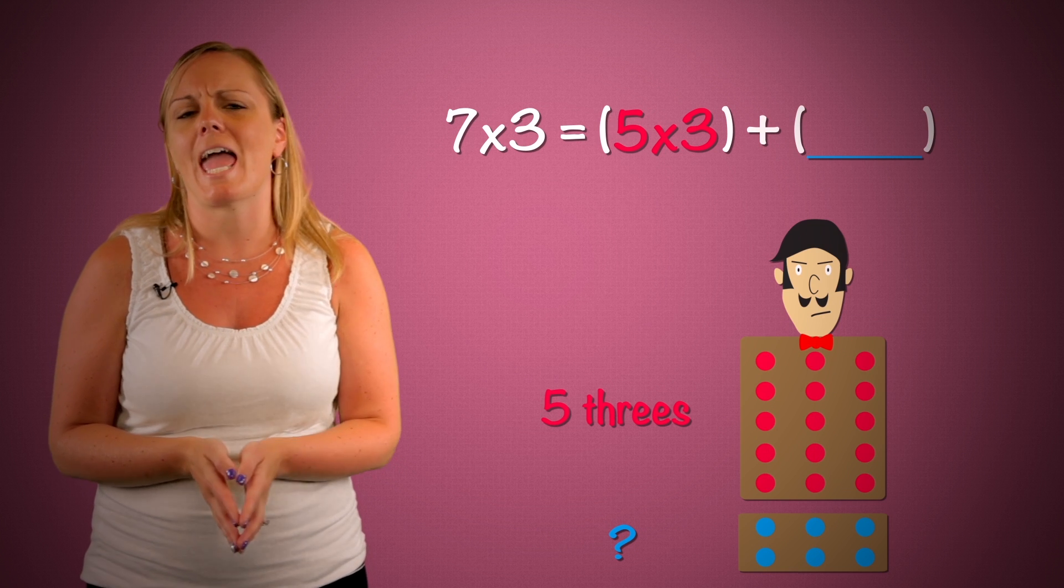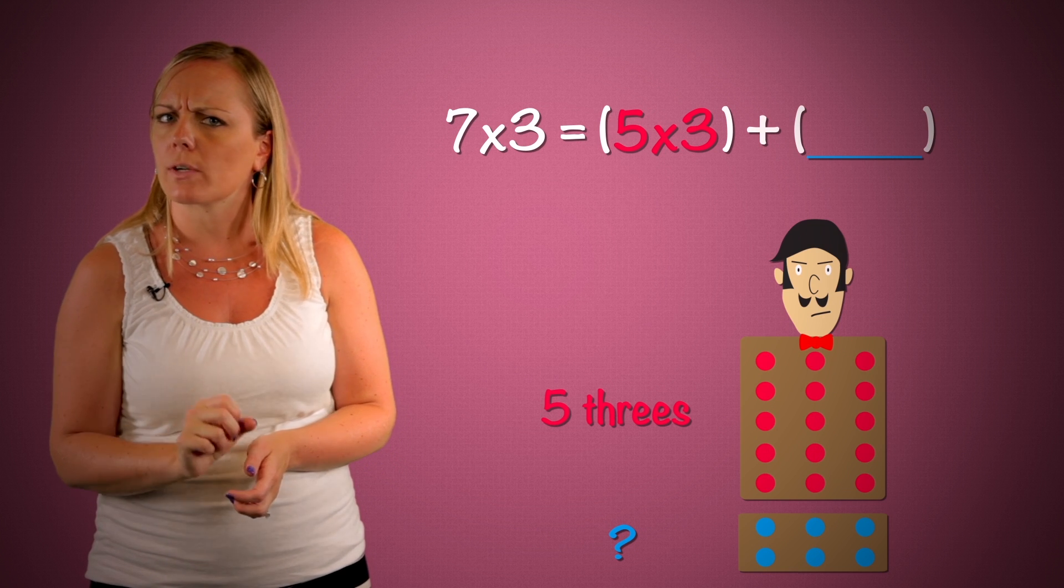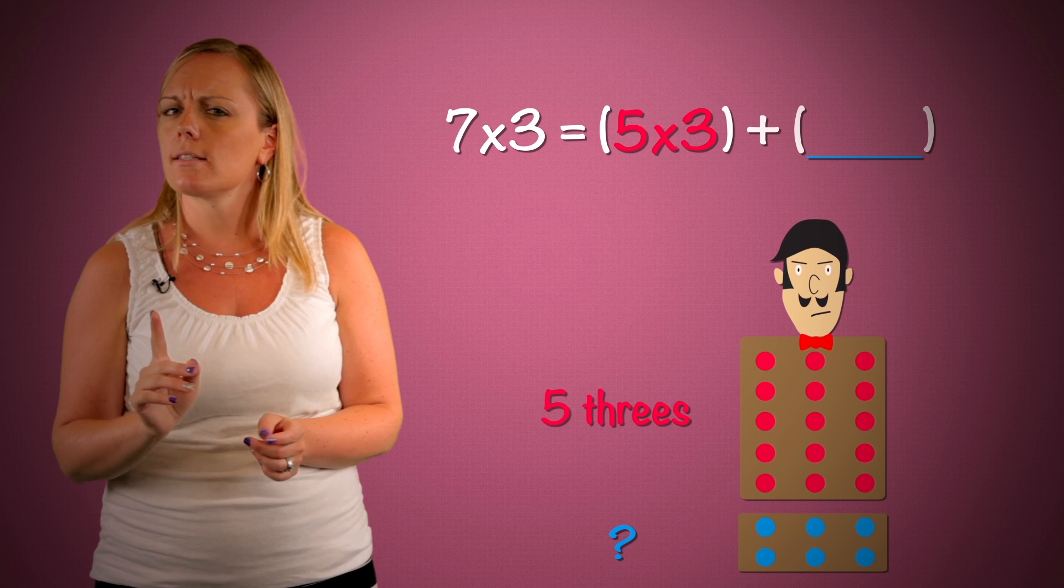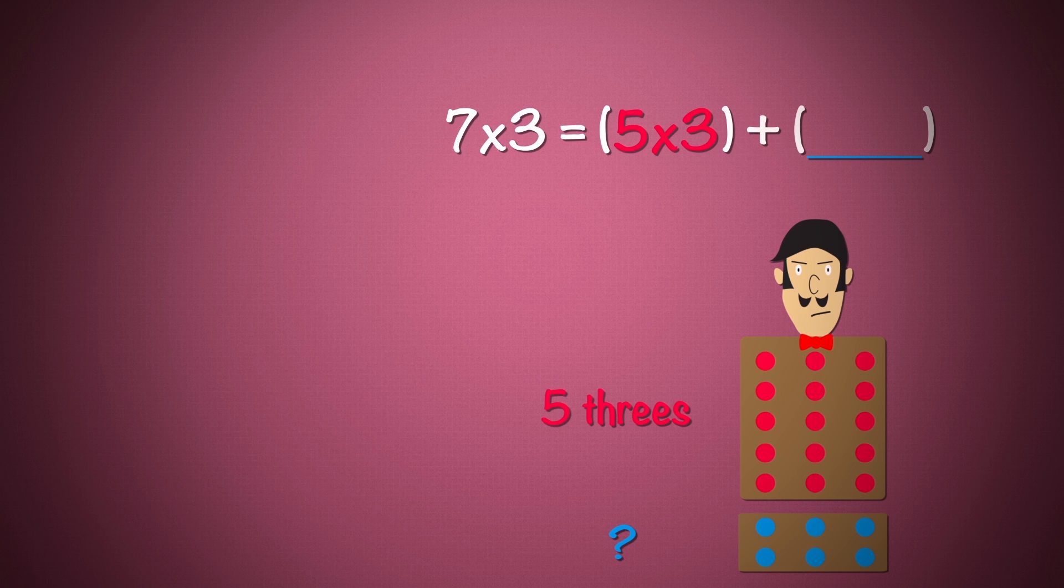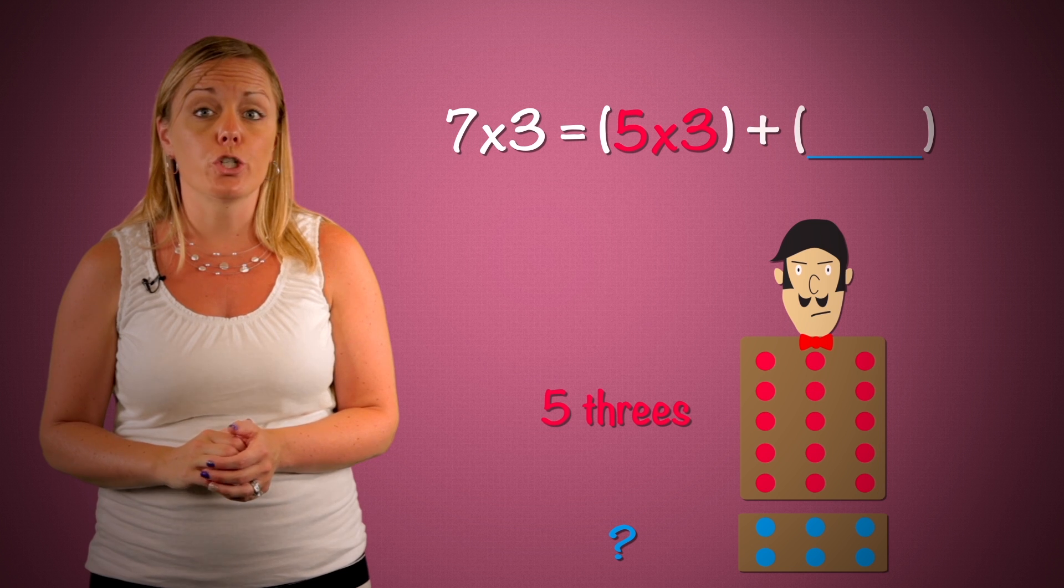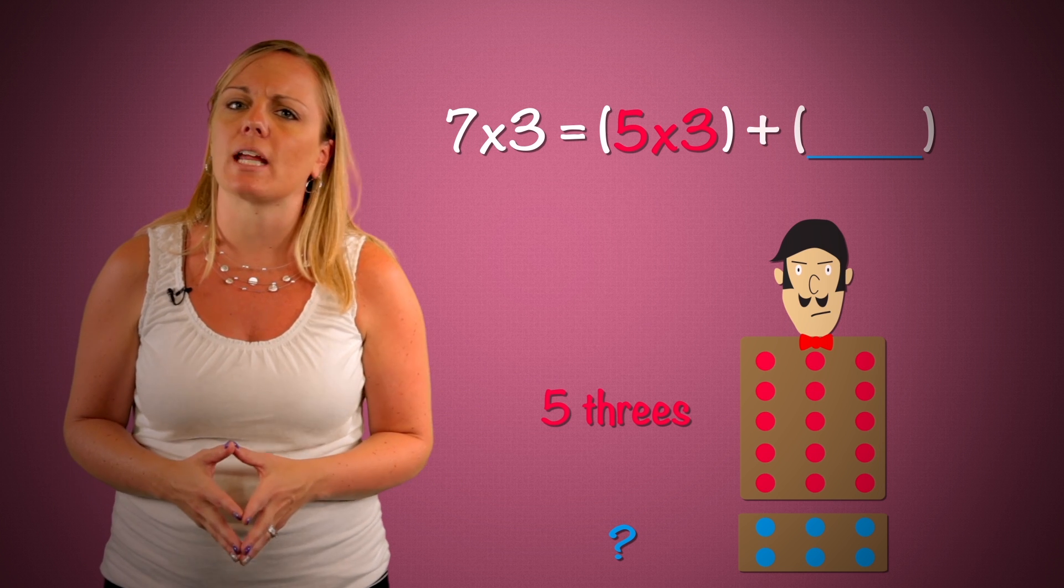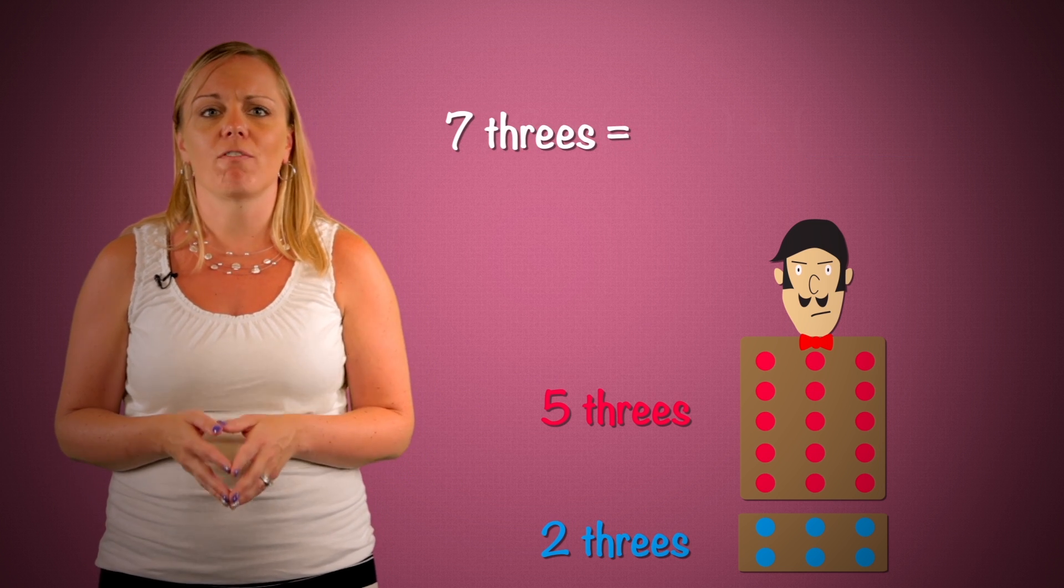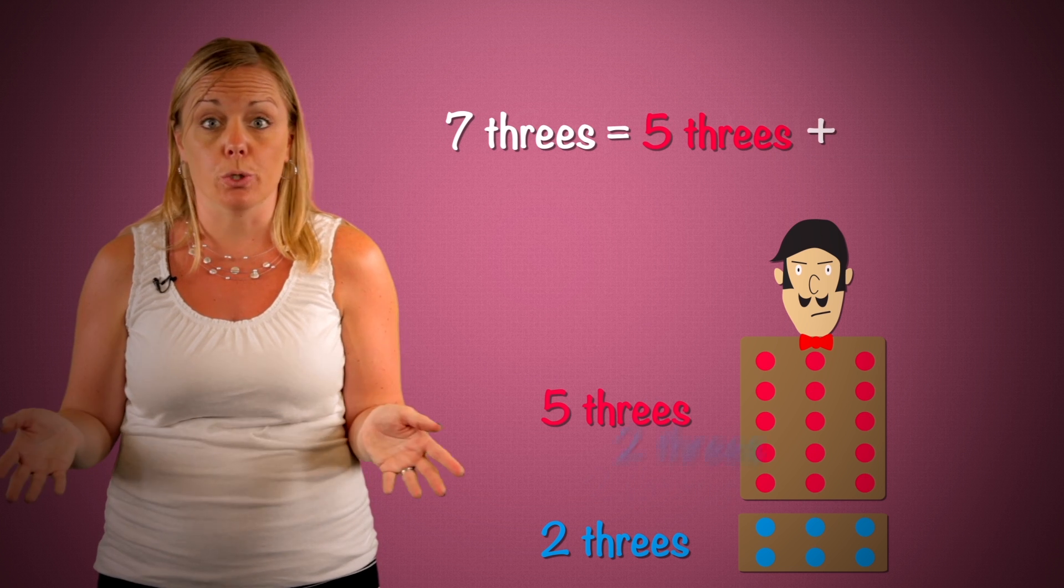how many threes do I add to five times three to make this? Seven times three. In order to remake the seven threes, I will take this five threes and add two more threes.